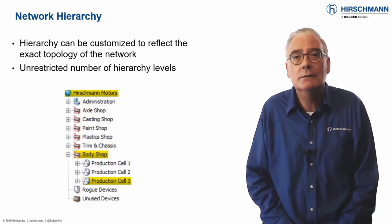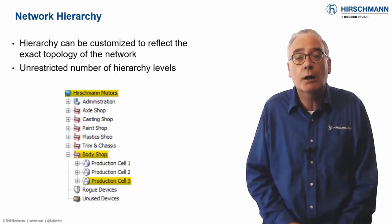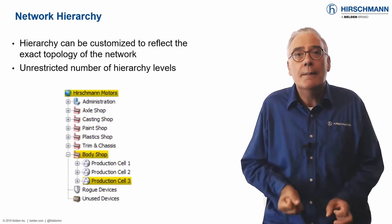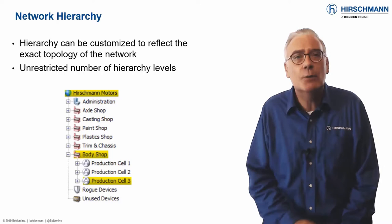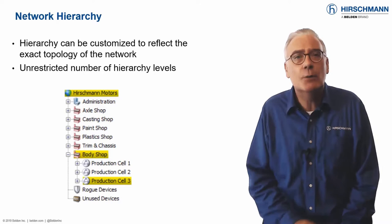The display is active, so it also represents the status of the network components. The status is propagated up the tree, which means that the tree does not need to be permanently expanded. The status of a higher level will always depict the worst-case status of a lower level, so you will never need to waste time searching for a network fault.